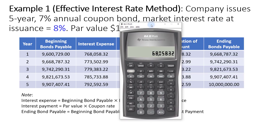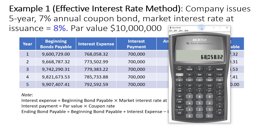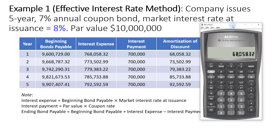Keep in mind that for a discount bond, it will approach the par value as it approaches maturity — that's the pull to par effect. The carrying value will slowly increase towards $10,000,000, which is the par value. What we do next is add this amortization amount to the beginning bond payable of $9,600,729.